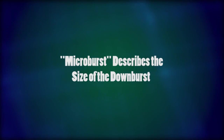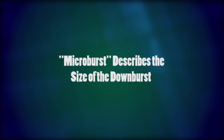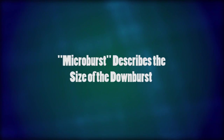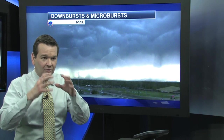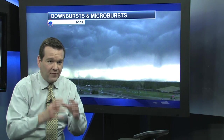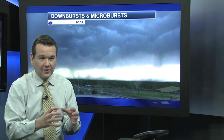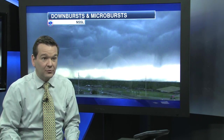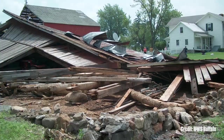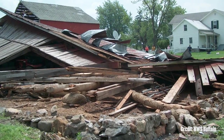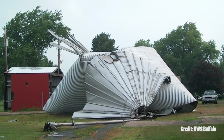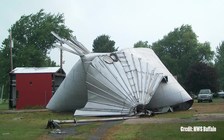In a microburst, it's a smaller scale feature, usually a mile or less. But being smaller, that air is really focused right down to the ground. So sometimes with a microburst, wind gusts can be as high as an EF3 tornado — 150 miles an hour or higher.